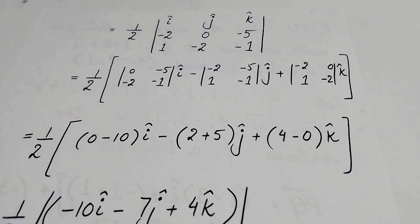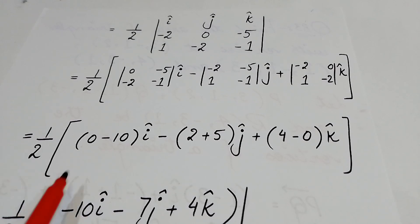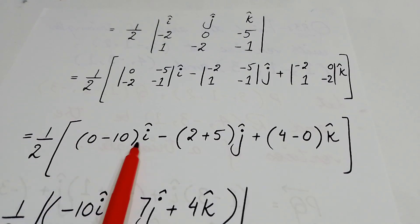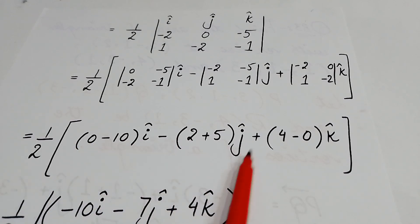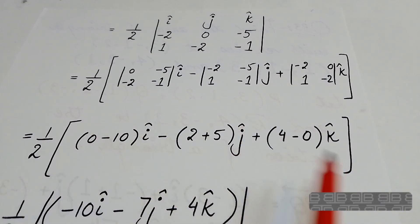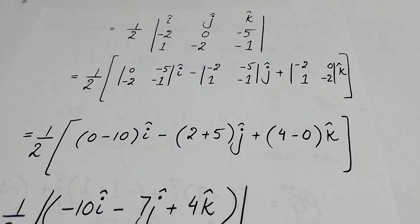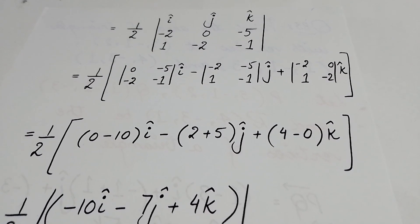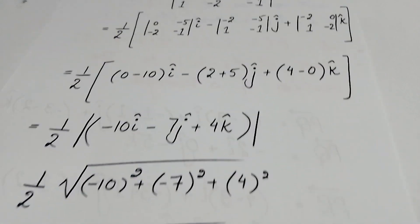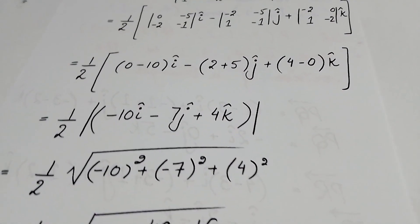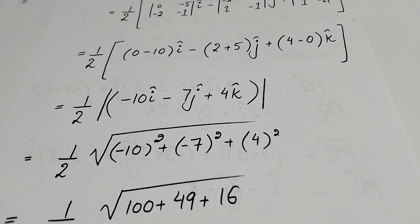The determinant of the 3×3 is expanded and simplified. After simplification, we get: (0 minus 10)i-cap minus (2 plus 5)j-cap plus (4 minus 0)k-cap, which gives minus 10i-cap minus 7j-cap plus 4k-cap. This is our PQ cross PR, the cross product result.